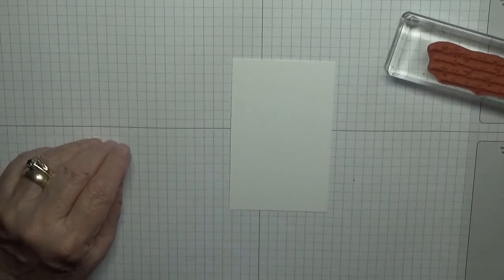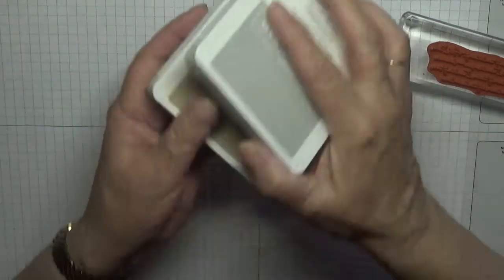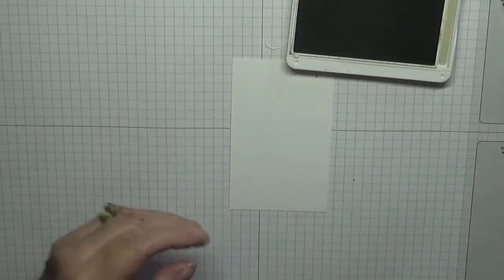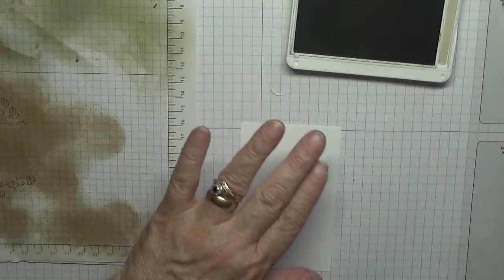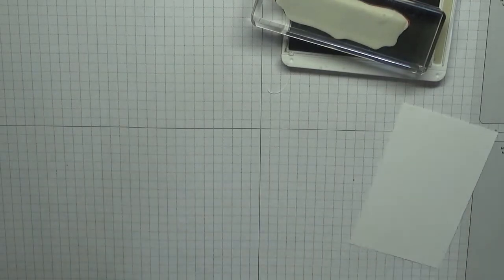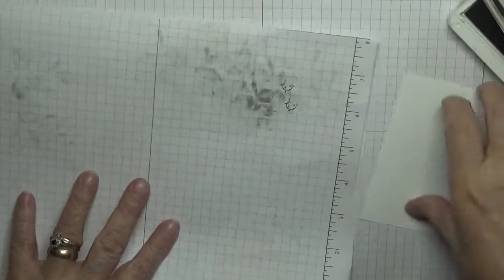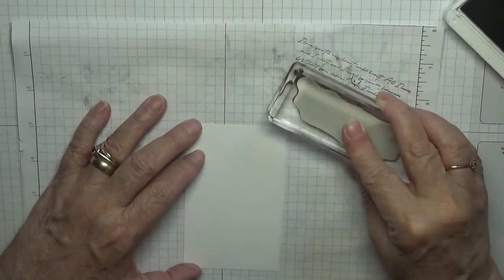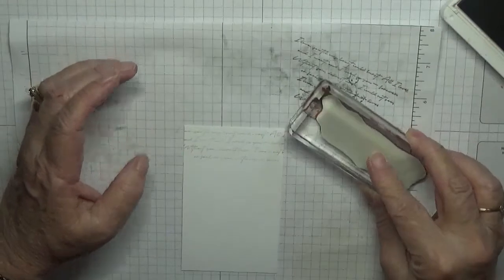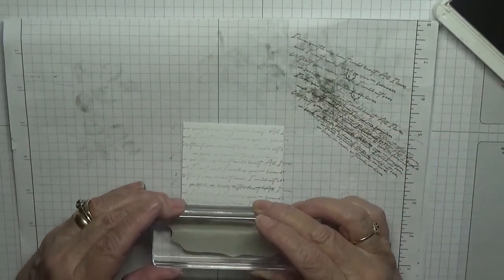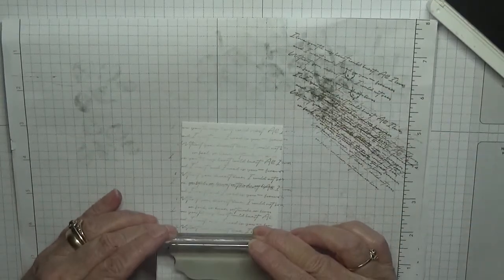First of all I have got the script, and I have got Crumb Cake ink here. I'm finding this Crumb Cake, it's a brand new one, I'm finding it very dark, so what I'm going to do is ink off, stamp off, and then stamp down. I'm going to do that all the way down like that.